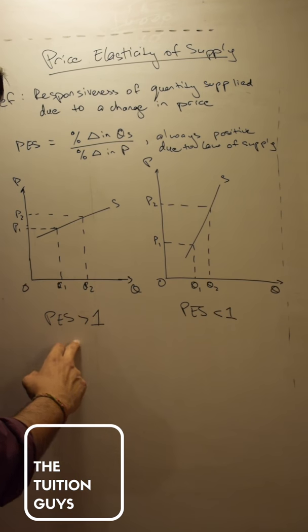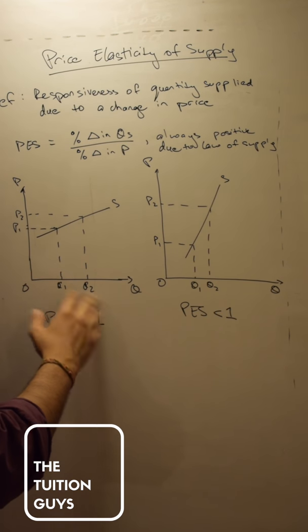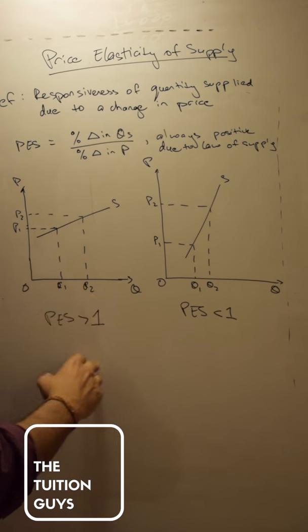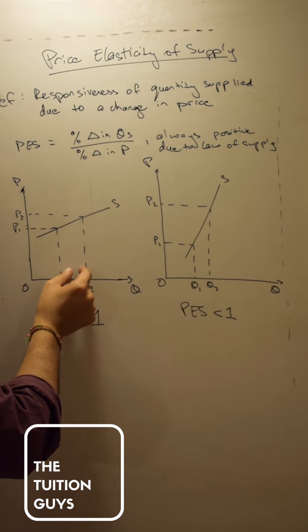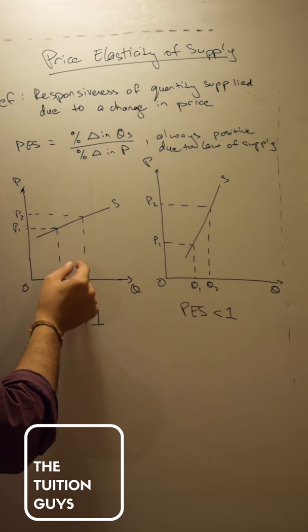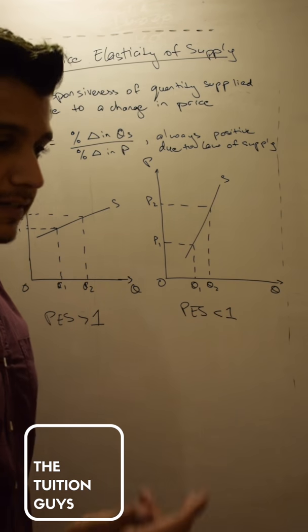Over here, PES is going to be greater than one. Throw in some numbers and you will easily be able to see that yes, the price elastic supply is indeed greater than one. You can see that this change in the quantity is much bigger than the change in the price.